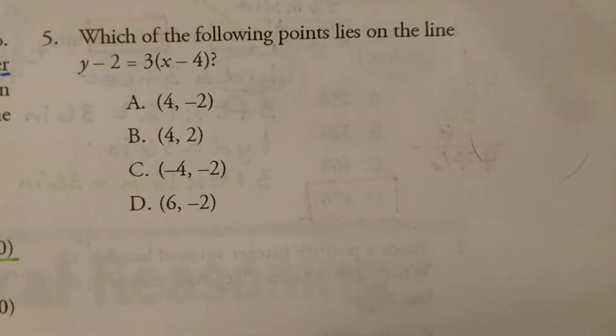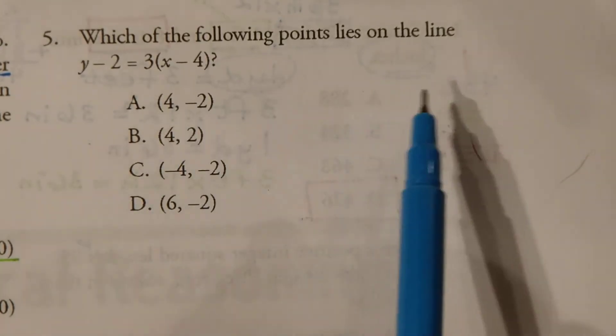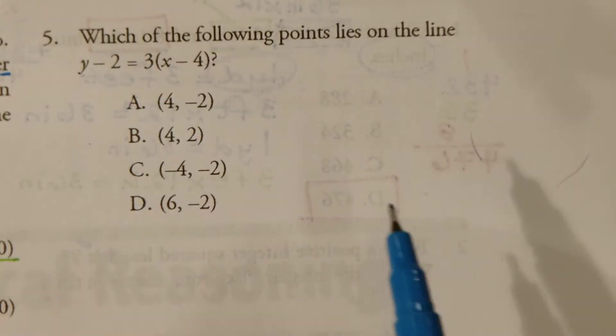Alright, looking at some more GED practice, we're at number 5. Which of the following points lies on the line y-2 equals 3 times x-4?